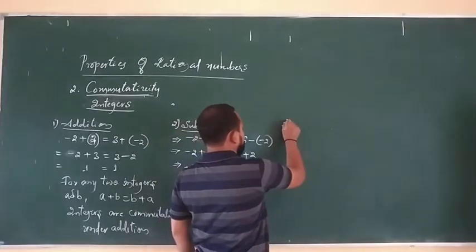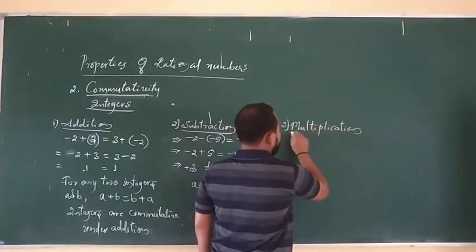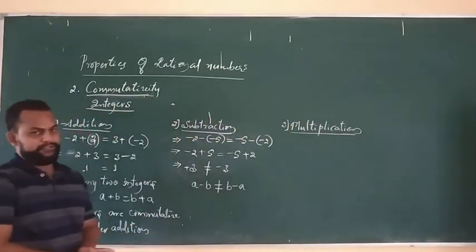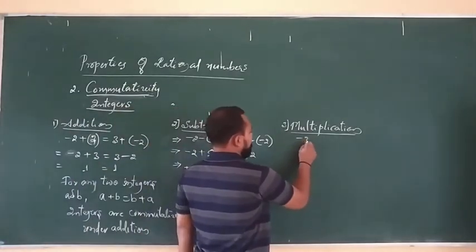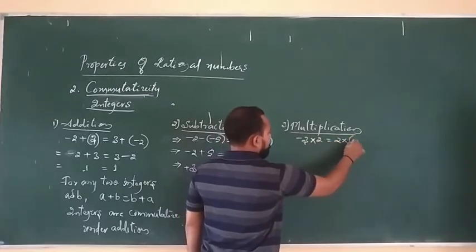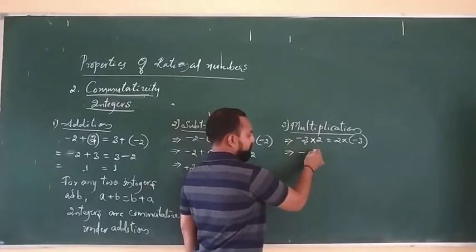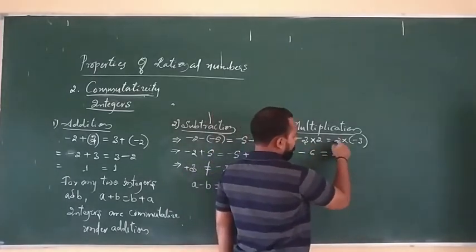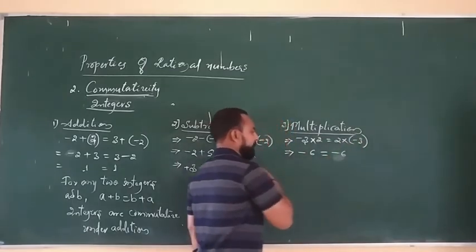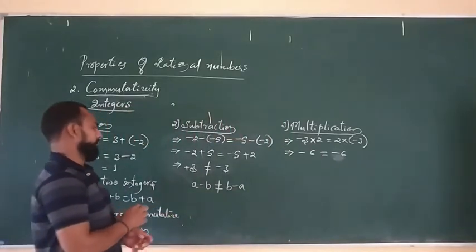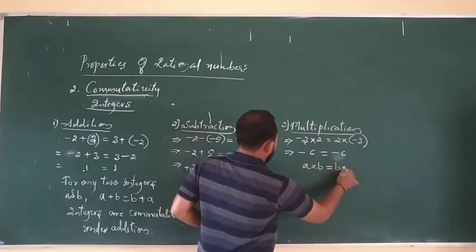The third operation is multiplication. The product of two integers: take minus 3 into 2 and 2 into minus 3. Here minus 3 into 2 equals minus 6, and 2 into minus 3 equals minus 6. Minus 6 equals minus 6. Therefore A into B equals B into A. The integers are commutative under multiplication.